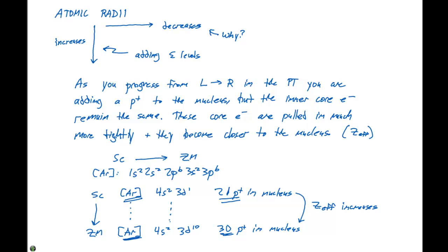And as a result, when we move from left to right in the periodic table, the general trend that we see in atomic radii is that the atomic radii decreases.